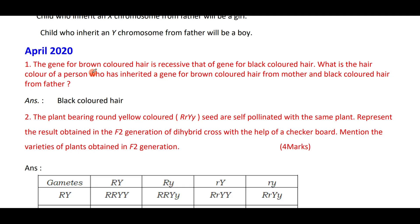The gene for black colored hair is dominant over the gene for brown colored hair. What is the hair color of a person who has inherited the gene for brown colored hair from the mother and black colored hair from the father? It will be black colored hair because black is dominant.